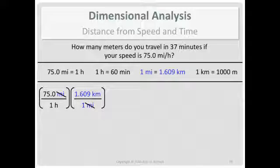So now I have kilometers per hour. Well, I don't want kilometers. I want meters. So I see another conversion that relates kilometers and meters to each other. So am I going to go kilometers over meters? Or meters over kilometers in my conversion? Meters over kilometers. For the same reason as before. This allows the kilometers to cancel.